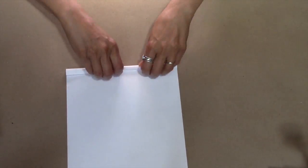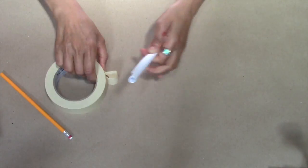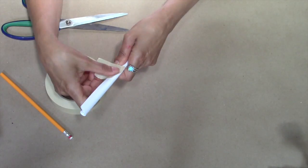First, roll a sheet of paper around the pencil to form a tube. Keeping the tube tight, add a piece of masking tape at the center, then at both ends.